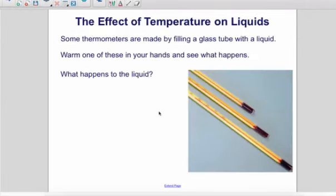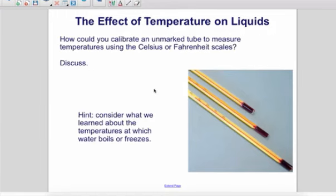Some thermometers are made by filling a glass tube with a liquid. Warm one of these in your hands and see what happens. What happens to the liquid? How could you calibrate an unmarked tube to measure temperatures using the Celsius or Fahrenheit scales? Discuss.